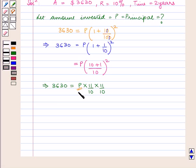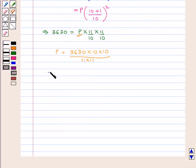So from this equation we have P equals 3,630 times 10 times 10 upon 11 times 11. This implies P equals $3,000.